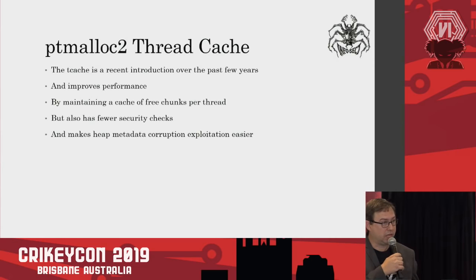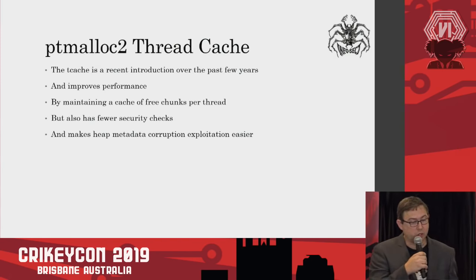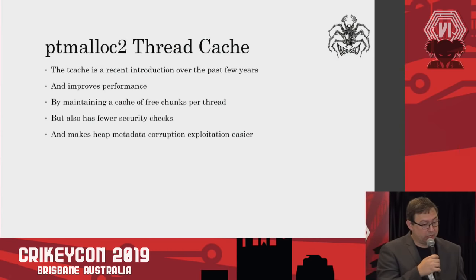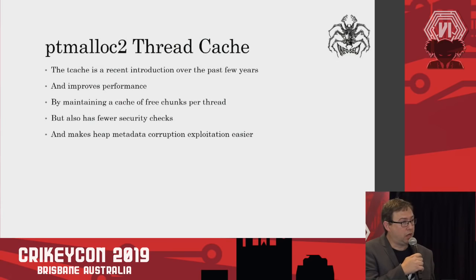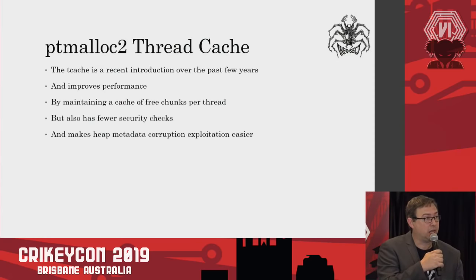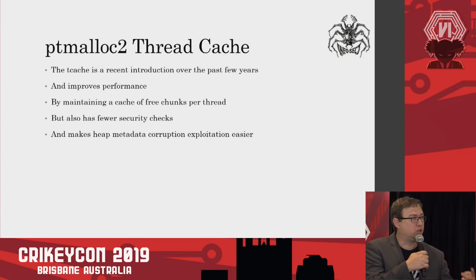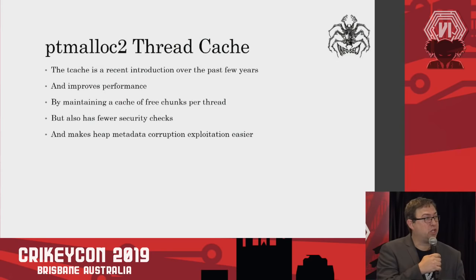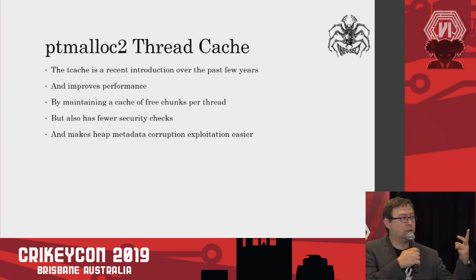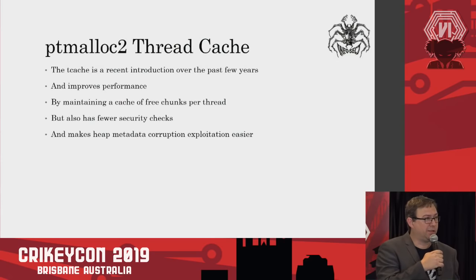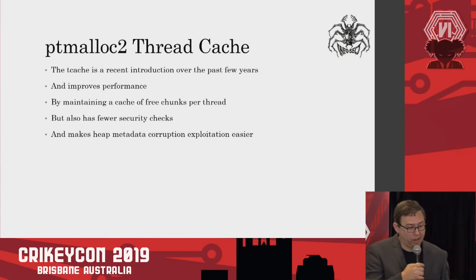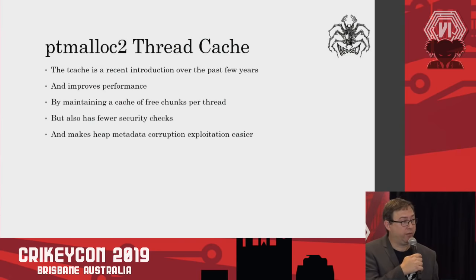What's great for an attacker but terrible for security is a recent implementation in glibc — the thread cache, or PT malloc 2 TCache. It's a recent introduction that improves performance significantly in threaded applications. It contains a cache of free chunks for each thread, effectively a list of bins associated with that thread that avoids all locking. And because it wants to be performant, it doesn't do much integrity checking at all, which is great for an attacker. It makes heap metadata corruption much easier and reinvents a lot of historical attacks.